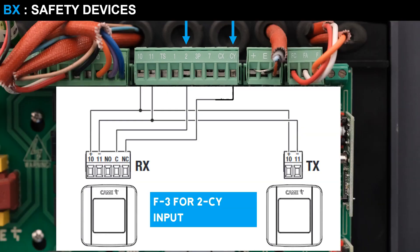If you want to use another pair of photocells, repeat the procedure by connecting the devices to terminals 2 and CY, and select function F3.